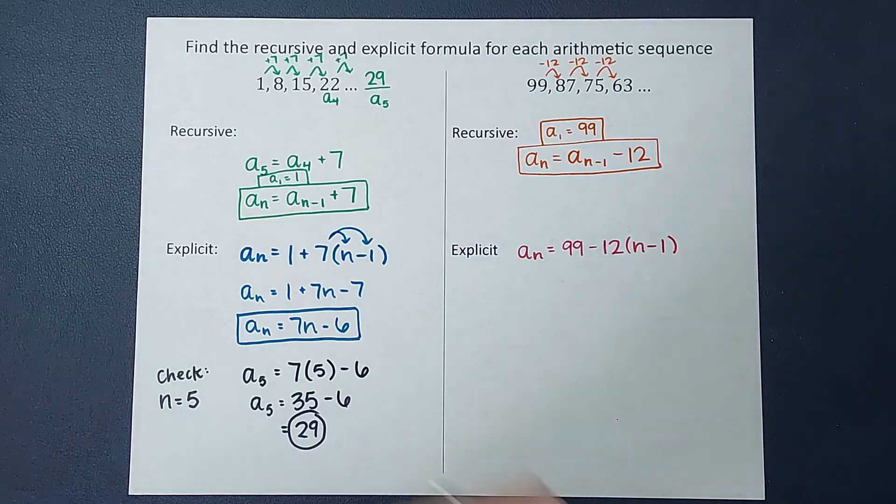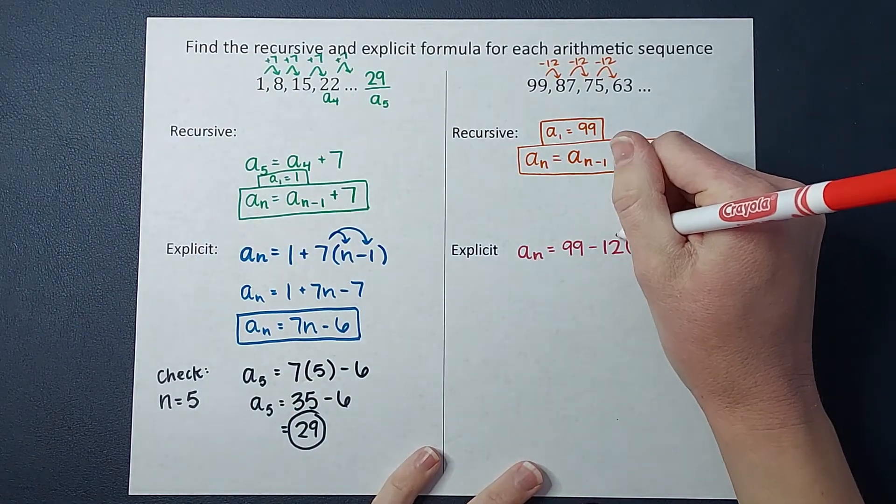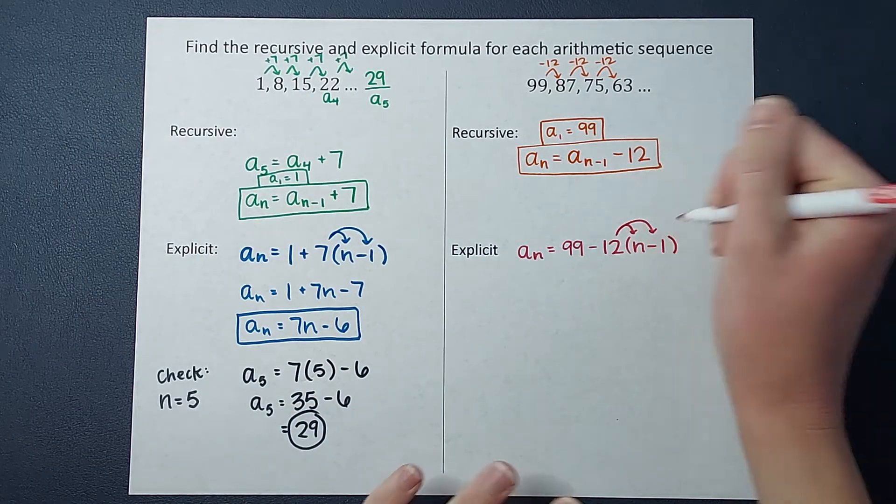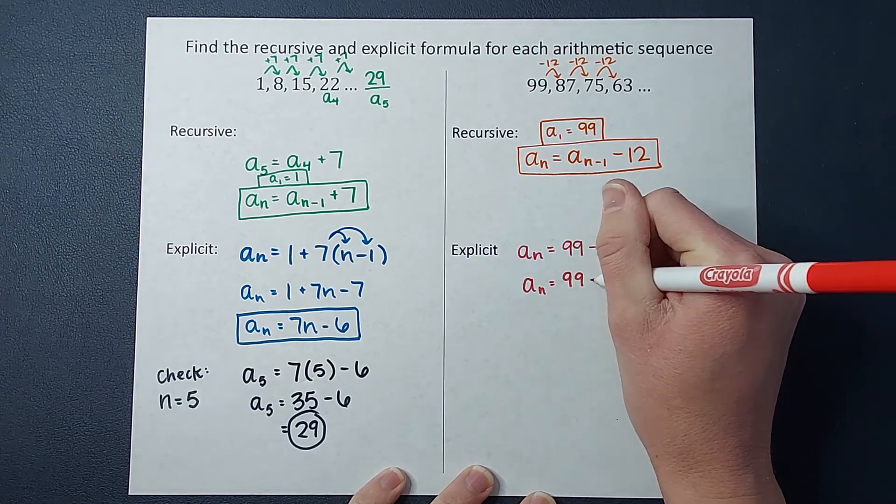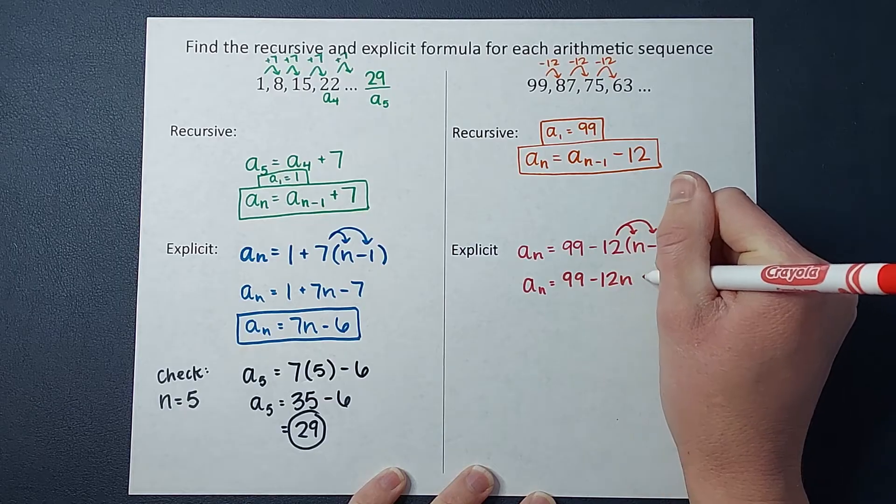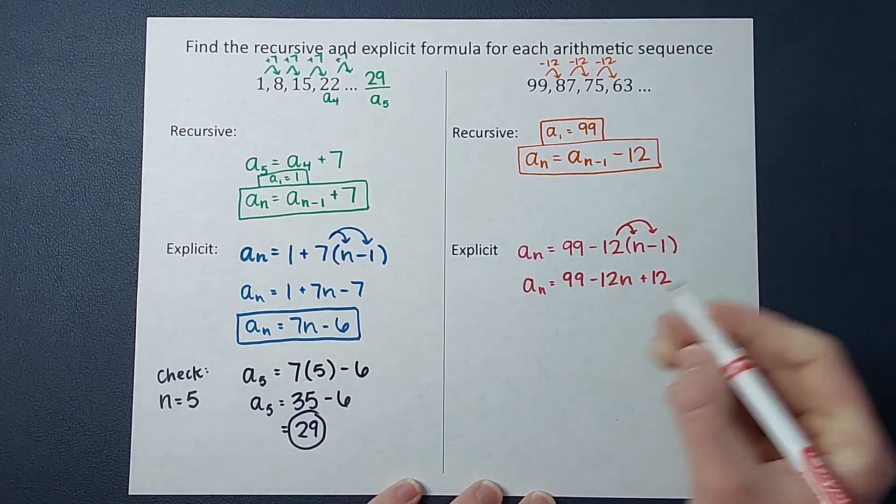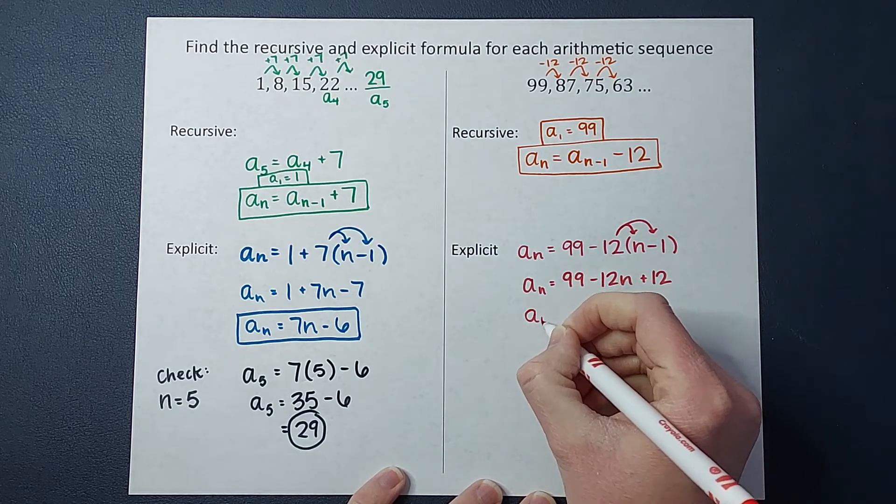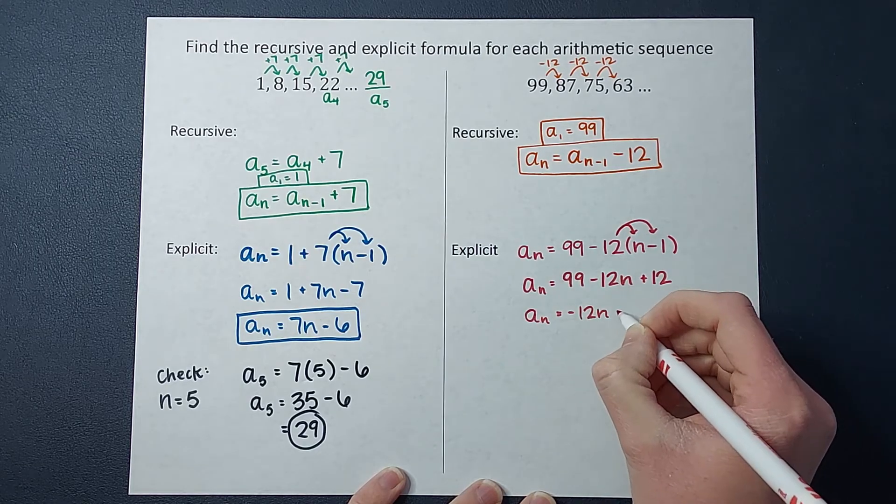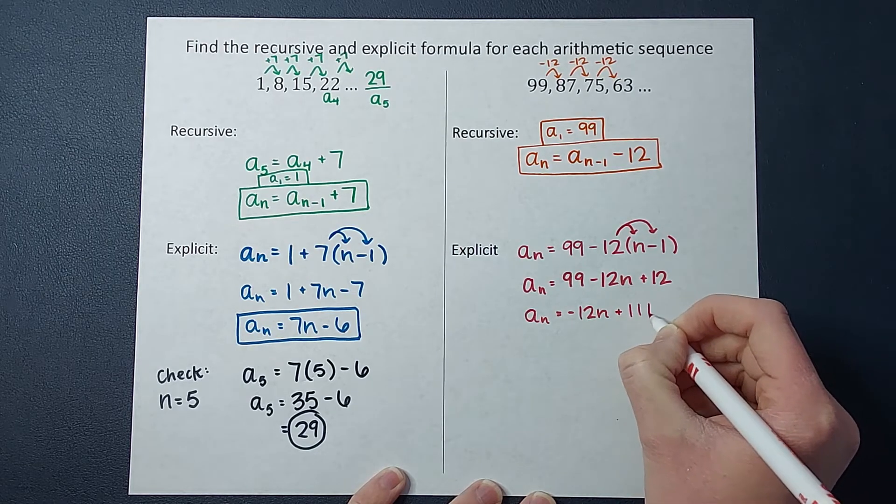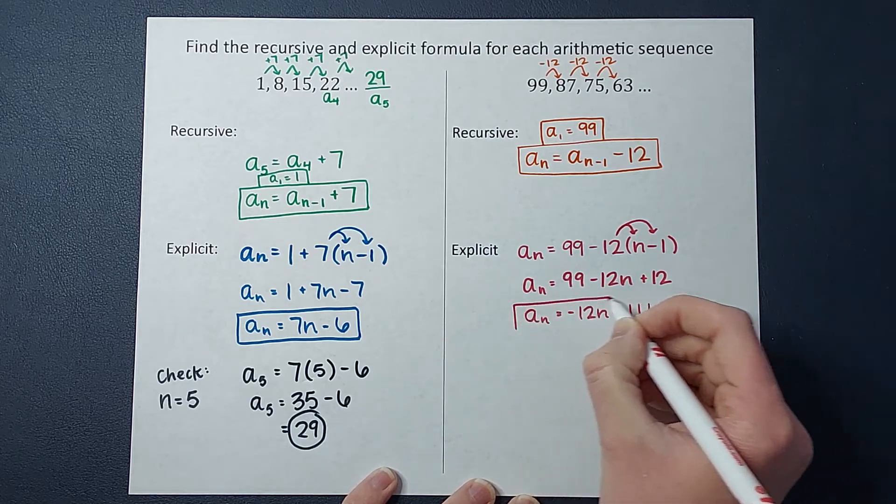Now some teachers, again, want you to leave it like that. Some want you to simplify it. So we will go ahead and do that. A sub n equals 99 minus 12n plus 12. And continuing to simplify that, we get negative 12n plus 111.